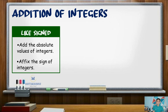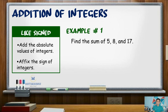For our first example, find the sum of positive 8, positive 5, and positive 17. Adding the absolute values of these numbers gives us a sum of 30. Since all the integers are positive, the sum is positive 30.